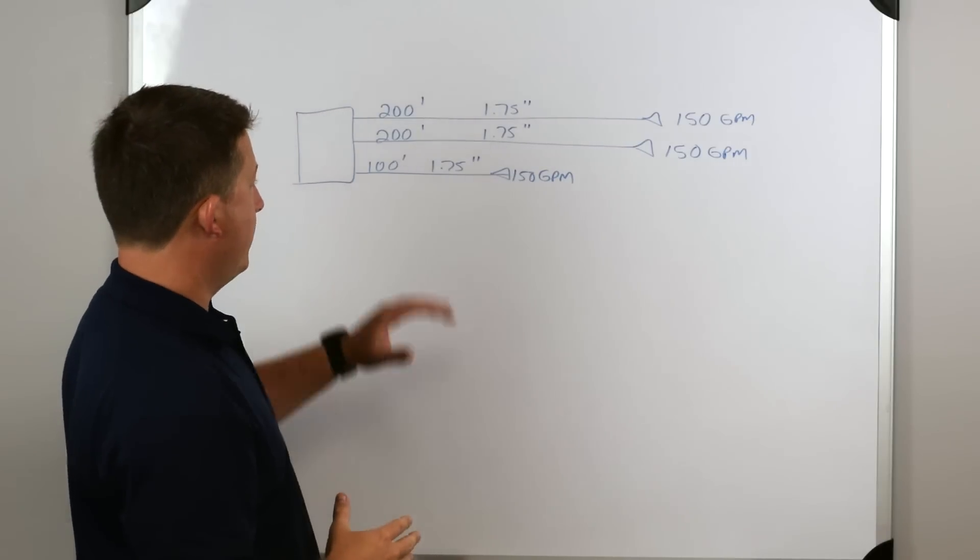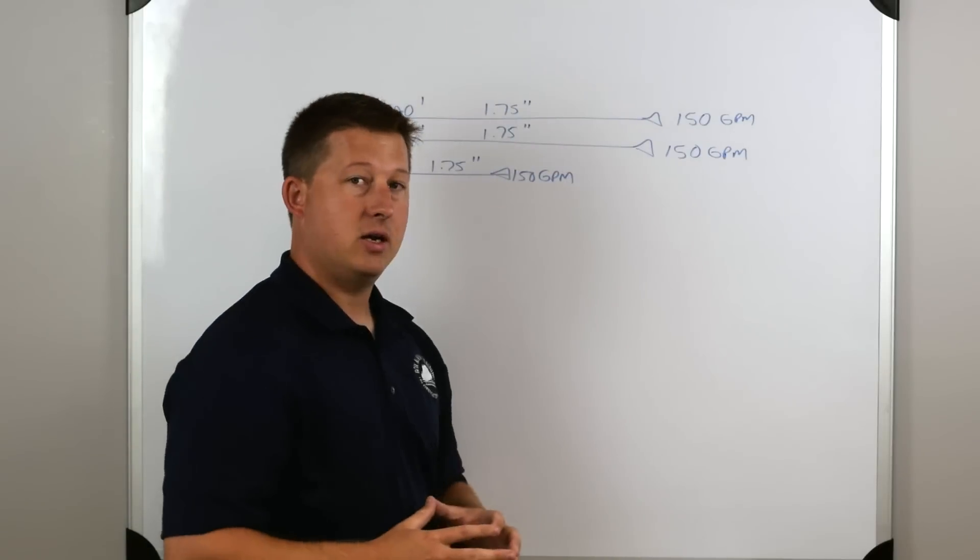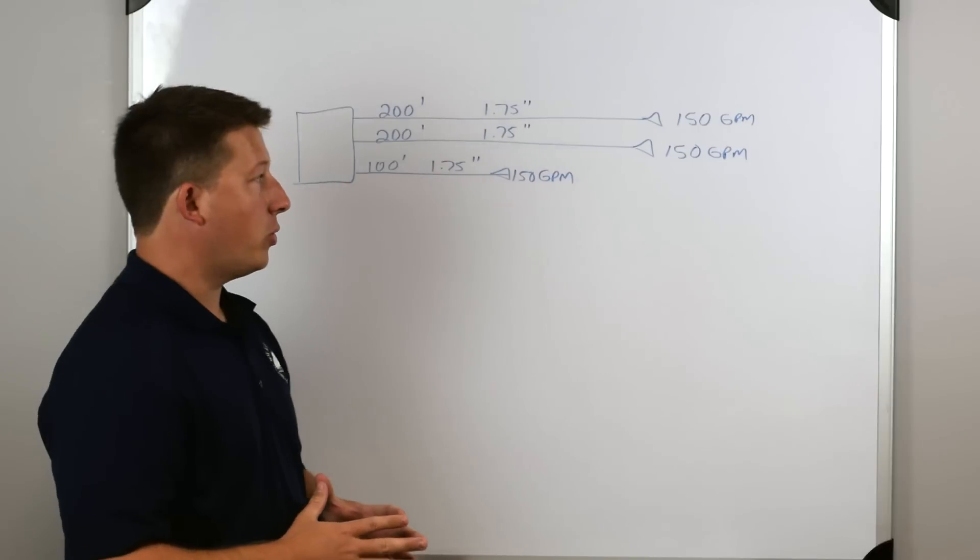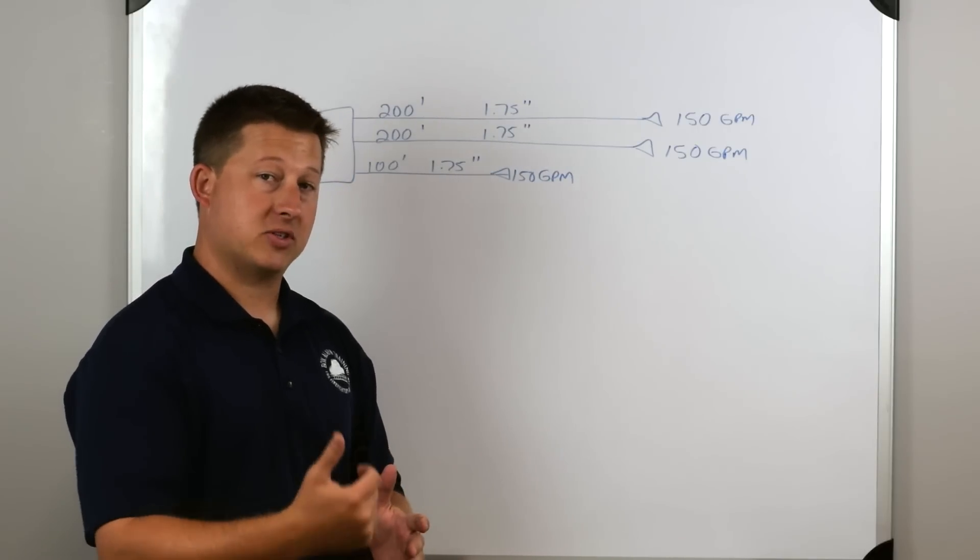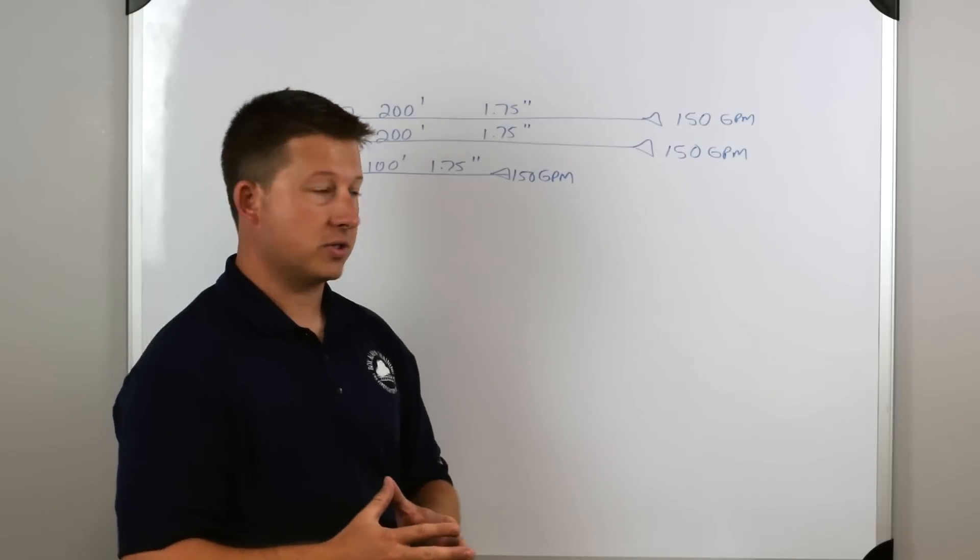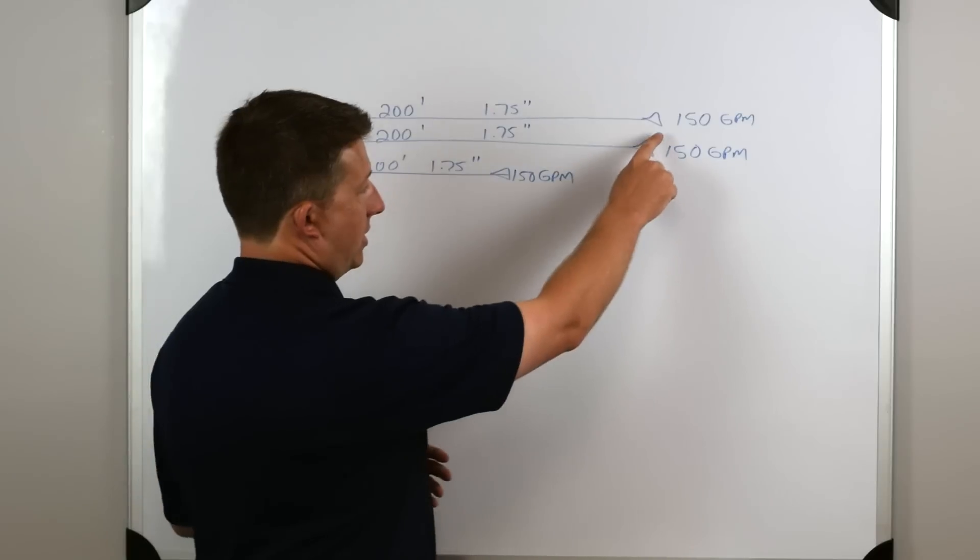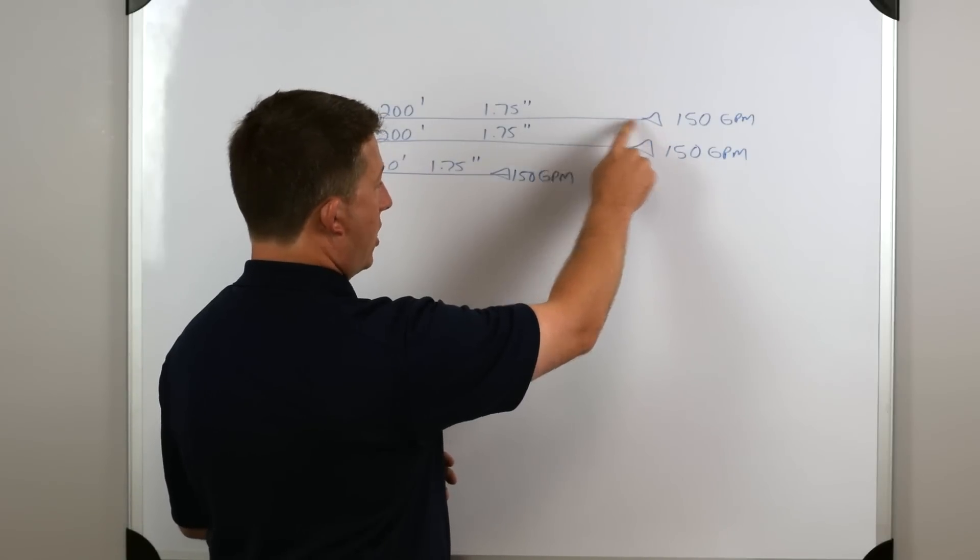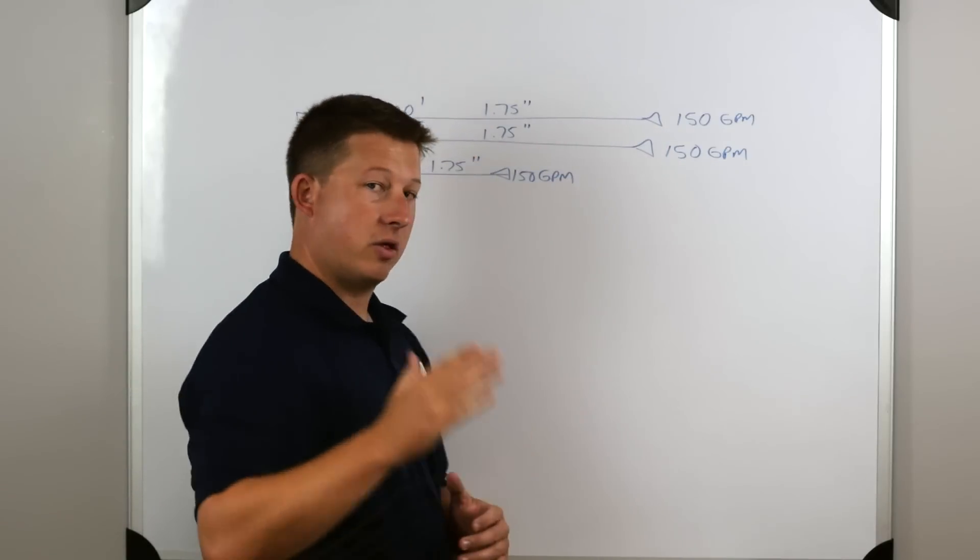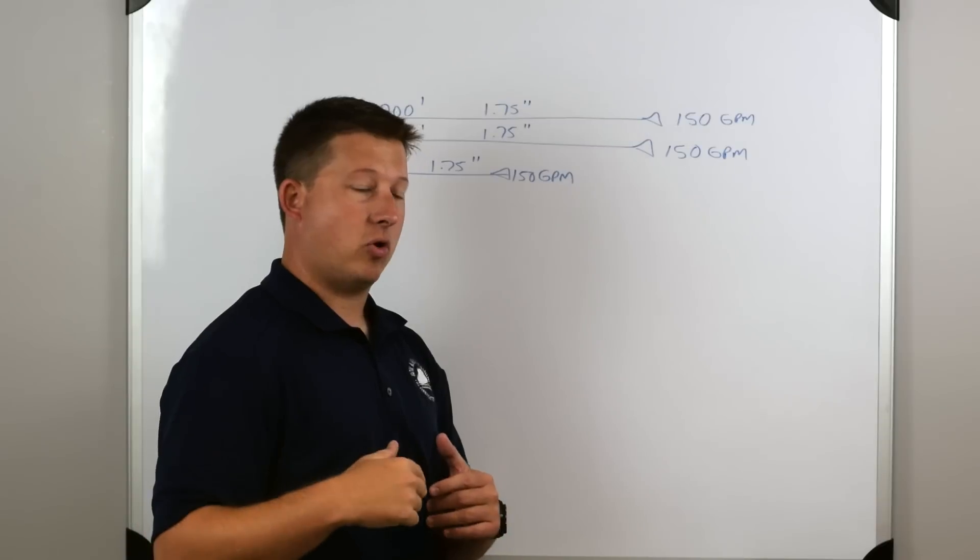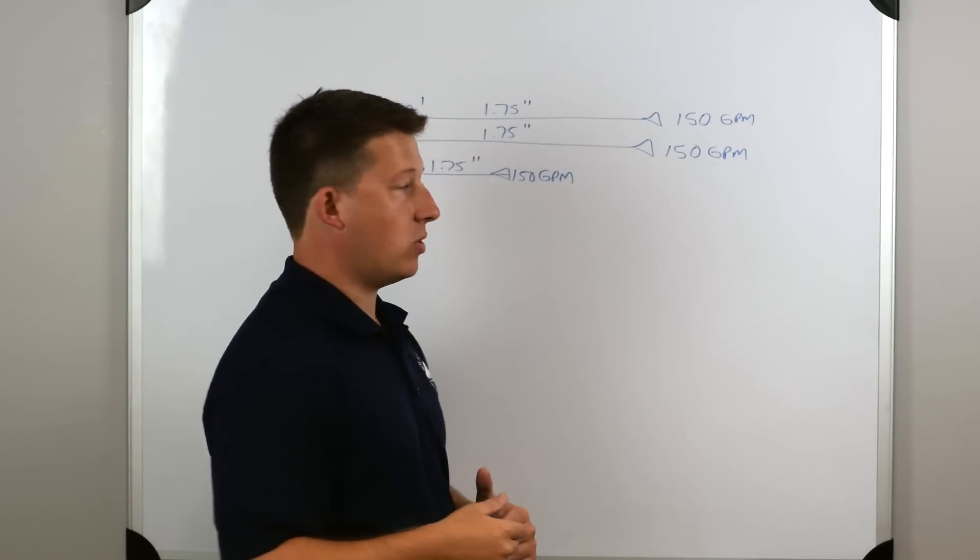It's going to be the same pump discharge pressure for the second line. So that being said, this would be 170 psi to pump that line. We would not add another 170 to pump the second line. That's not the way that it works. We have 170 psi delivered to this nozzle. When we open this second nozzle, the psi is going to drop because now we're flowing more water, twice as much water.